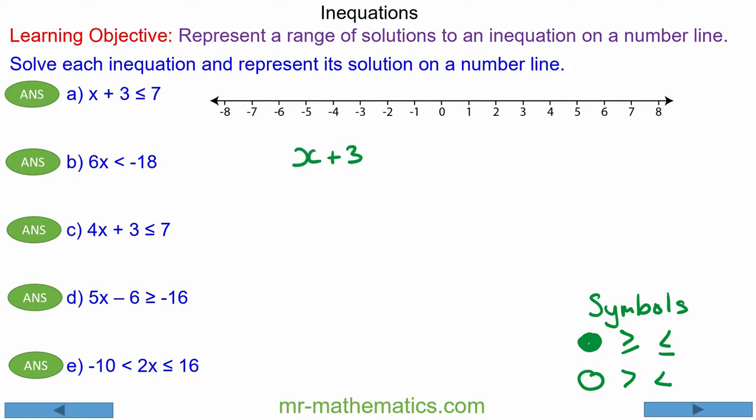So we begin with x + 3 is less than or equal to 7 and we can use the balance method to take away 3 from both sides and they cancel to make 0. So x is less than or equal to 4, which is a full circle going left from 4.